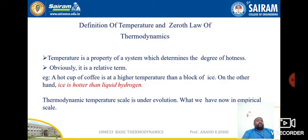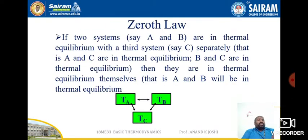Next is the zeroth law of thermodynamics. First, understand what is meant by temperature. Temperature is a property of a system which determines the degree of hotness or coldness of a body. We humans can sense whether a body is hot or cold. For example, a hot cup of tea is at a higher temperature than a block of ice, while ice is hotter than liquid hydrogen. This thermodynamic temperature scale is based on empirical evaluation.